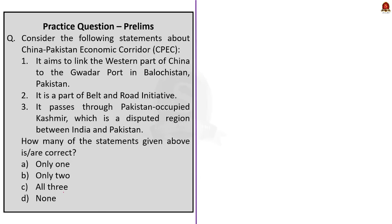The fourth question gives three statements regarding the China-Pakistan Economic Corridor. Statement one — it aims to link the western part of China to the Gwadar port in Balochistan, Pakistan — is correct. Statement two — it is part of the Belt and Road Initiative — is also correct. Statement three — it passes through Pakistan-occupied Kashmir, which is a disputed region between India and Pakistan — is also correct. The correct answer is option C, all three.